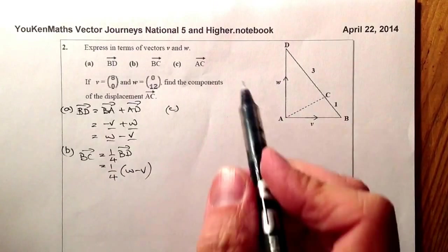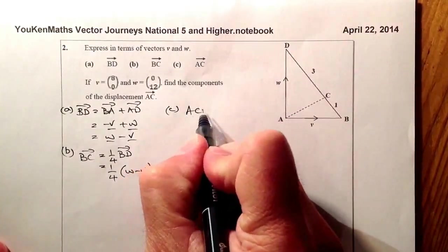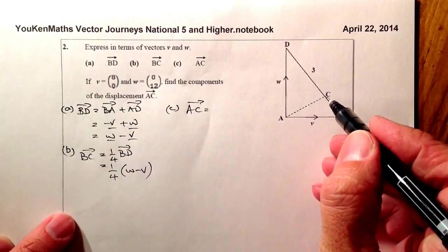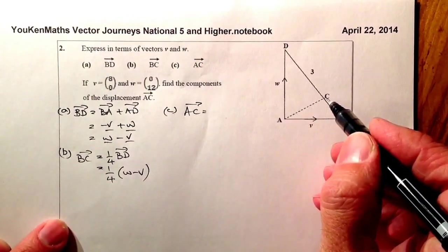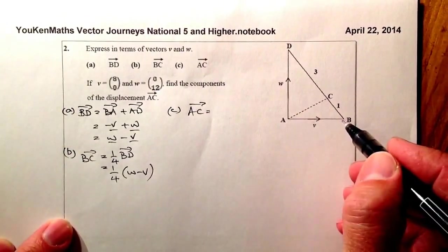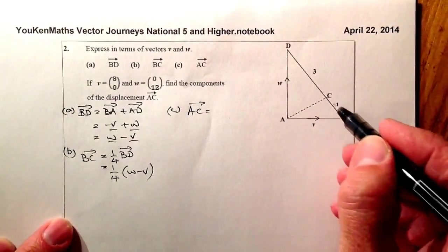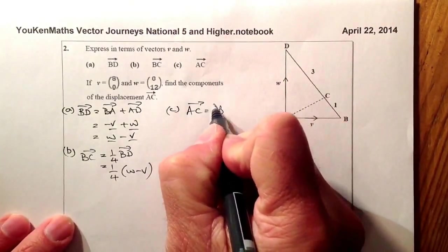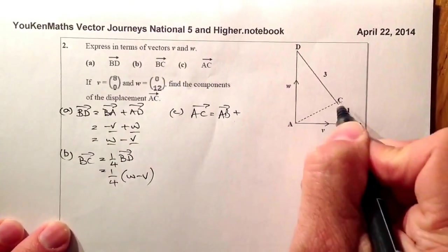Let's do part C next. So I've got the vector AC. Right, from A to C, what I could do is I could go up in this route here, or what I could do is go this route, because I've already worked out that part there, and I know that one there. So I'm going to go from A to B, first of all. I'm going to add on to that B to C.